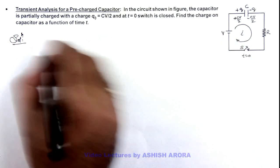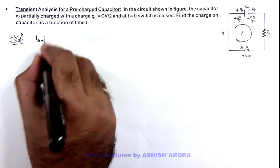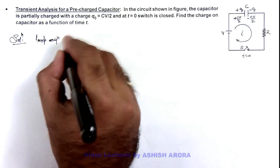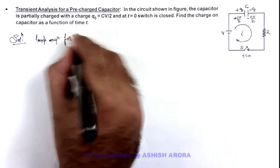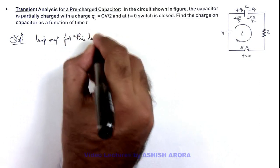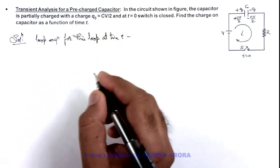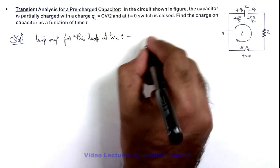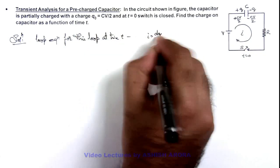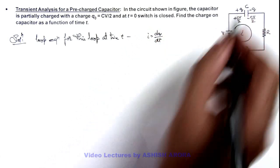So you can write the loop equation, or KVL equation, for this loop at time t, which is a general instant. Here we can write the value of i as dq/dt, the rate at which charge is deposited on capacitor.